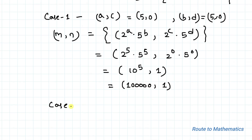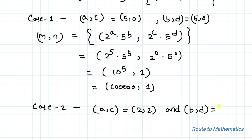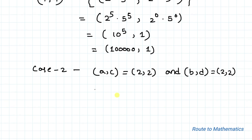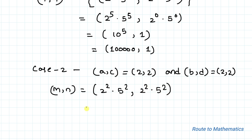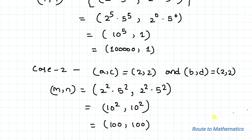Case 2: Take (a, c) = (2, 2) and (b, d) = (2, 2). Then m = 2² · 5² = 4 · 25 = 100, and n = 2² · 5² = 100. So (m, n) = (100, 100) is another solution.